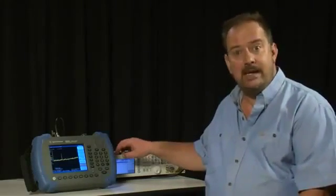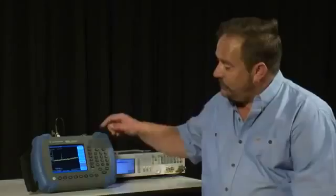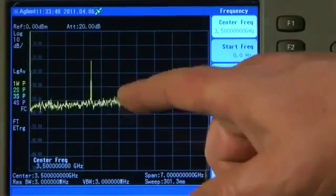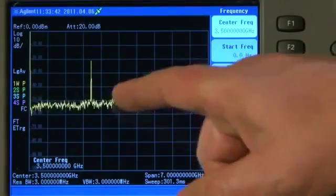Before we start making measurements of modulated carriers from transmitters, let's start off by making a few simple measurements from this MXG signal generator I have here, which is generating a 2.4GHz CW, in other words, unmodulated RF signal.